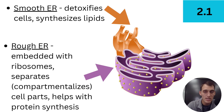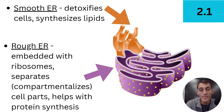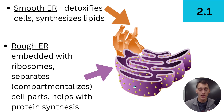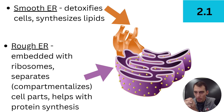The rough ER is called 'rough' because it's embedded with ribosomes, making it look bumpy. The smooth ER is called 'smooth' because it lacks ribosomes. The rough ER compartmentalizes cell parts and helps with protein synthesis. Its embedded ribosomes produce proteins, and those proteins are placed into a vesicle — a small piece of that membrane — which can then be shipped around the cell. Membranes can reform and branch off while keeping their integrity, which is what makes this process possible.